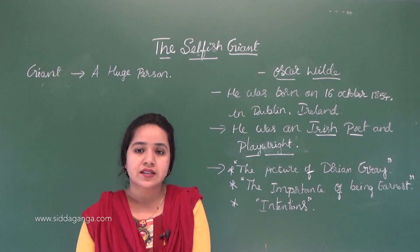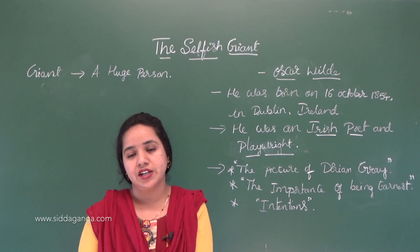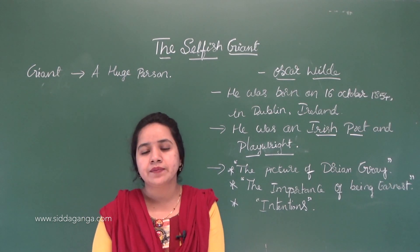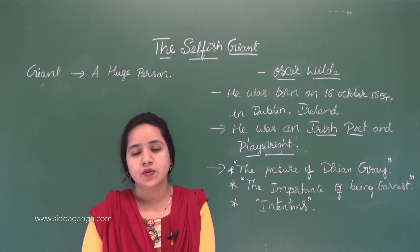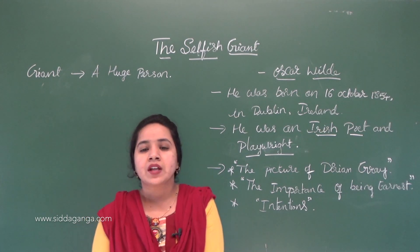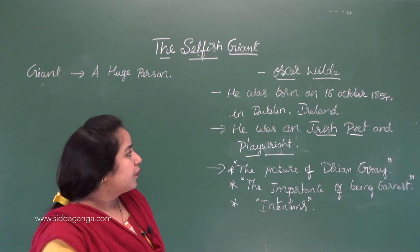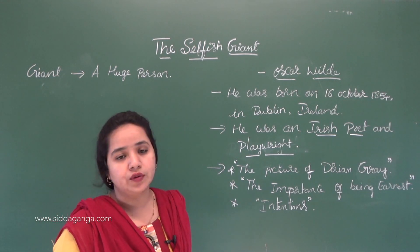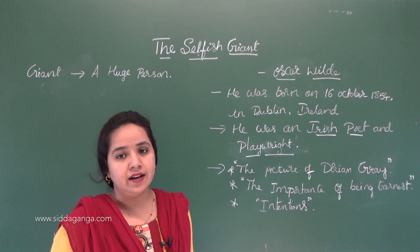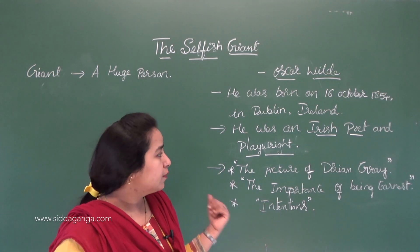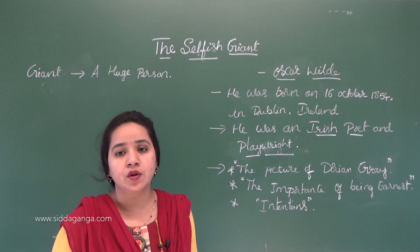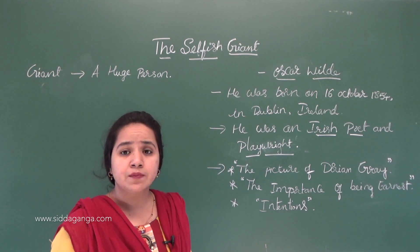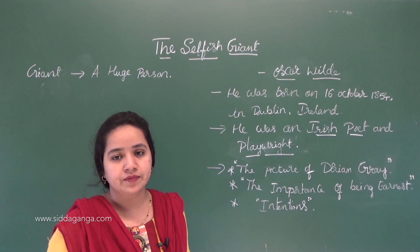The name of the lesson is The Selfish Giant, written by Oscar Wilde. He was born on 16th October 1854. He belongs to Ireland — he was born in Dublin, which belongs to Ireland.